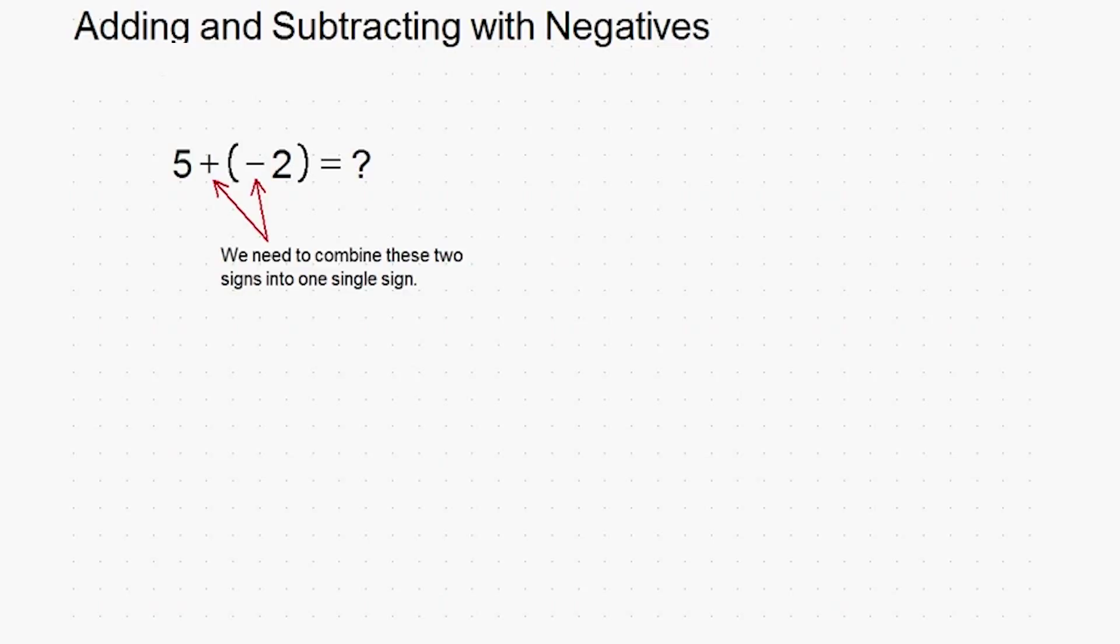We have to combine these signs into just a single plus or a single minus sign. In case you don't remember the guidelines for how this works, here they are. By the way, if you know how to multiply and divide negatives, this should look familiar because it's the same thing.